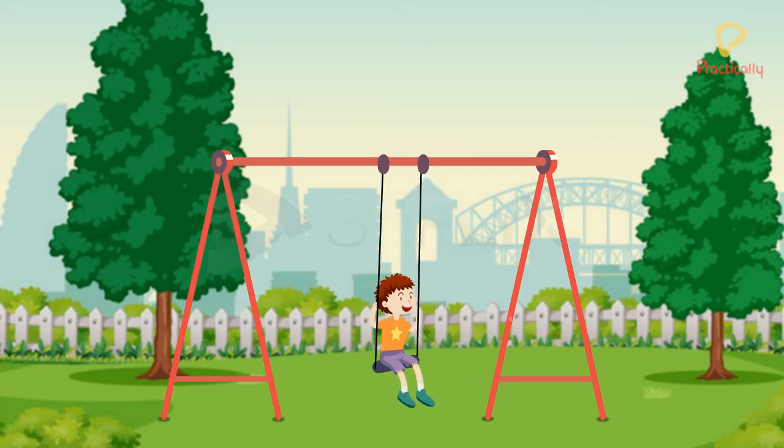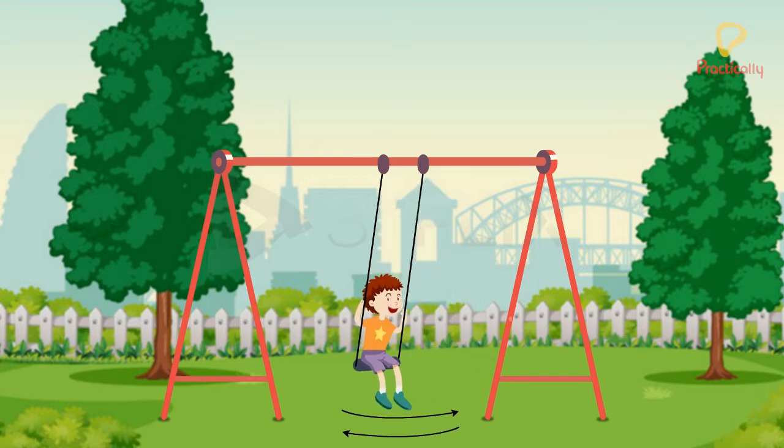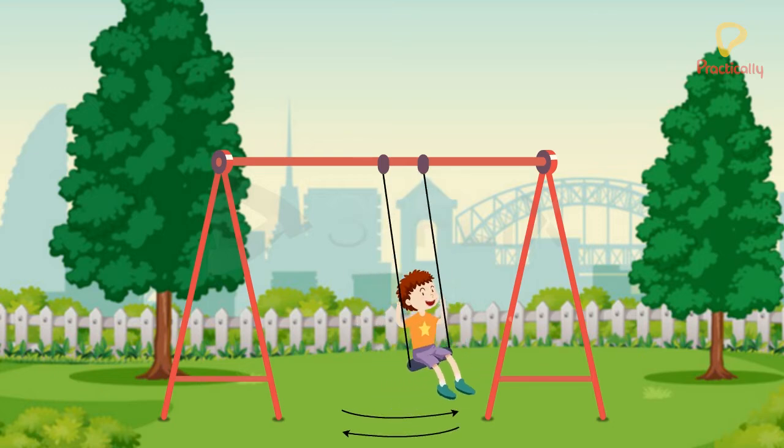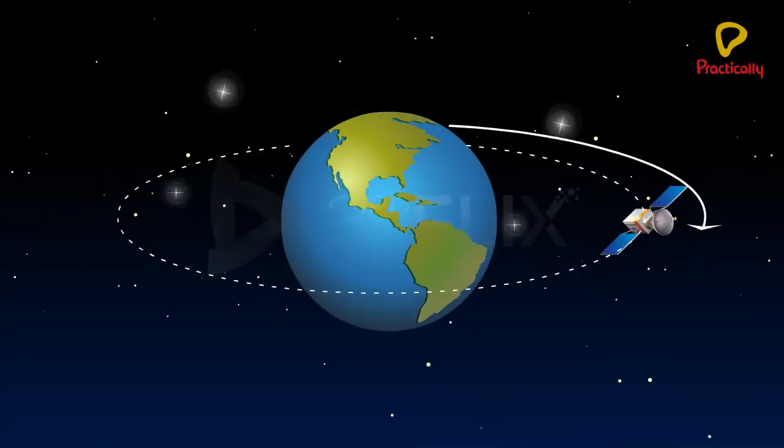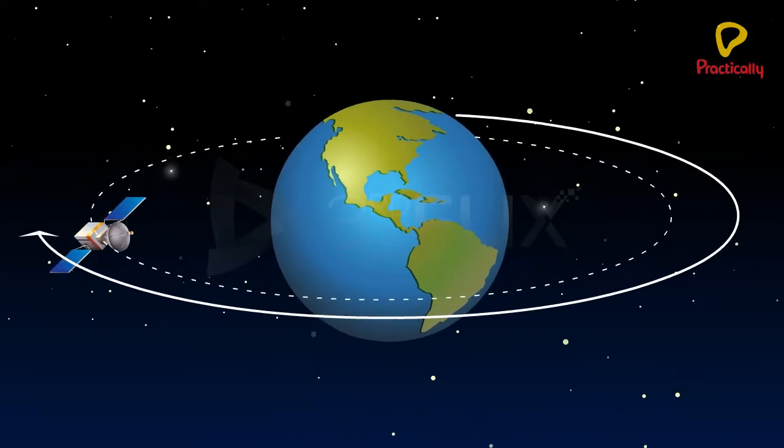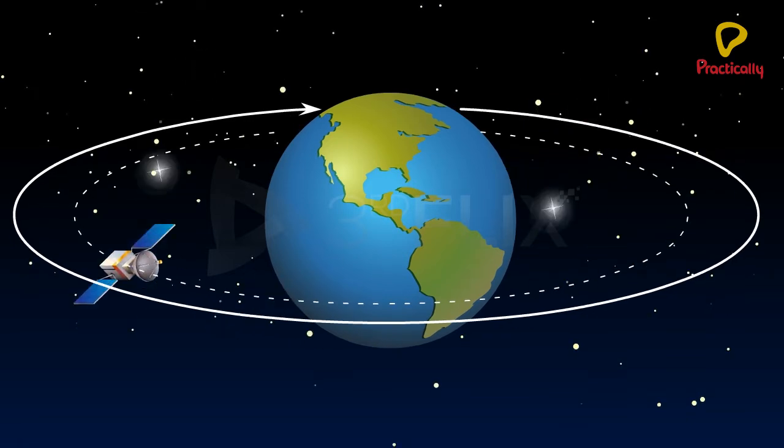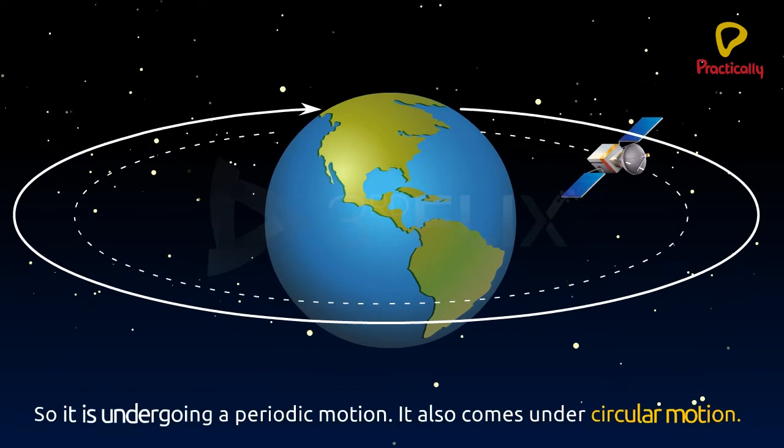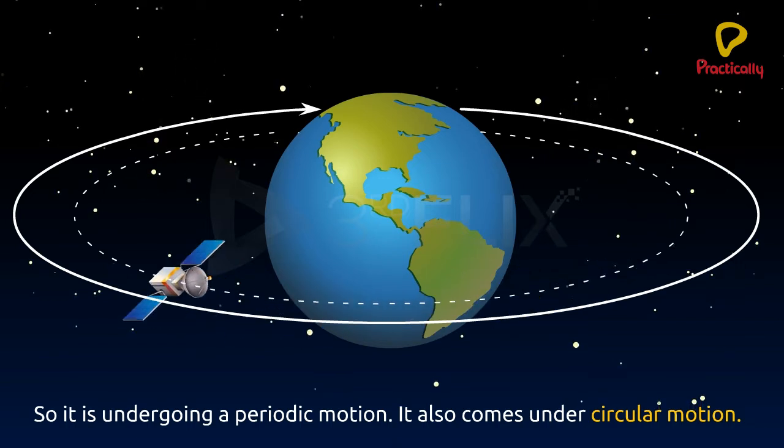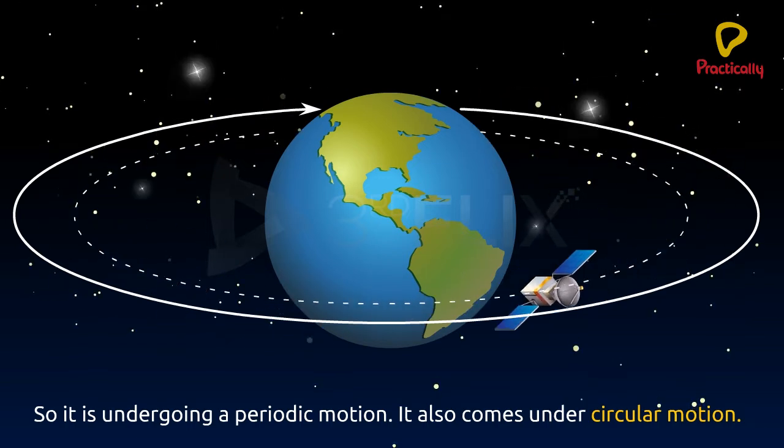A swing in the playground moves in a periodic manner. Note that a satellite orbiting around the Earth also repeats its path in equal intervals of time. So, it is undergoing a periodic motion. It also comes under circular motion.